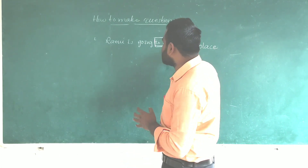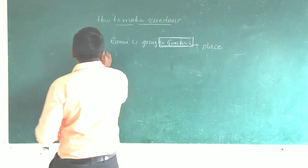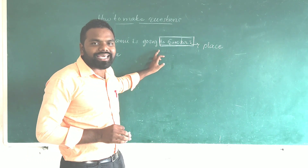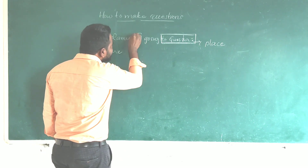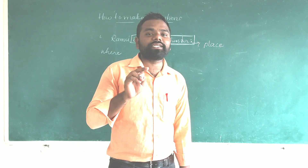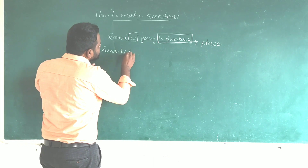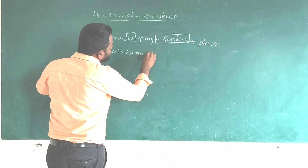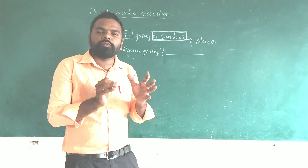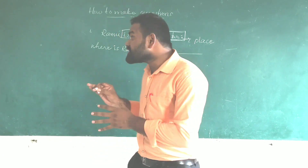Now, since Gundur is the answer, the WH question word we use is 'where.' Immediately, in the above sentence, if you observe very clearly, there is a helping verb — the helping verb is 'is.' Now we take 'is' out of the sentence to make the WH question. So the question becomes: Where is Ramu going? The answer is: to Gundur. Where is Ramu going? — means Ramu is going to Gundur. This is the way we need to follow.